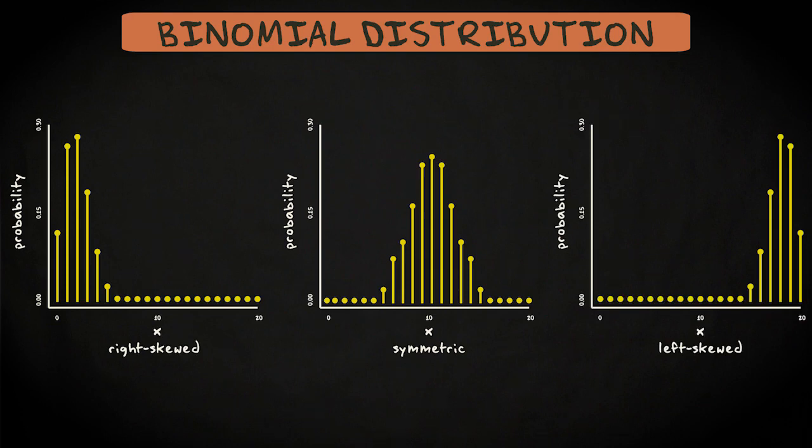These three distributions show the numbers of successes in 20 trials for different probabilities of success. For the first, the probability of success is 0.1. For the second, it's 0.5. And for the third, it's 0.9.